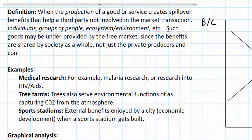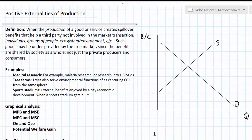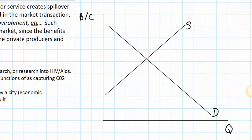Let's choose one of these examples and do a graphical analysis. In our graph, instead of putting price on the vertical axis, I've put benefits and costs, since in the analysis of market failures we prefer to look at the social benefits and social costs of production. Let's assume that demand represents both the marginal social benefit and the marginal private benefit — in other words, there are no externalities of consumption. Supply represents only the marginal private cost of production.